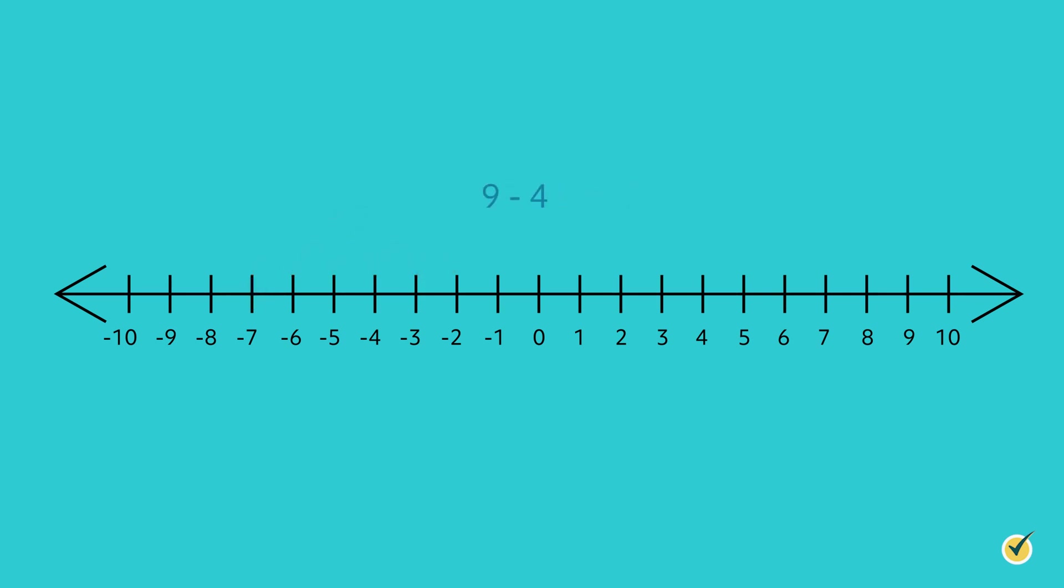Now let's try subtracting 9 minus 4. We will start at the number 9 on the number line, and since the operation is subtraction, this time we're going to move to the left. We move left 4 spaces, which lands us on 5. Therefore, 9 minus 4 equals 5.